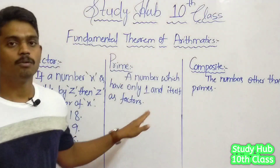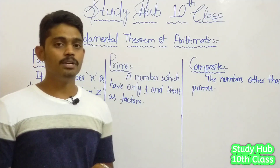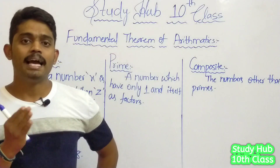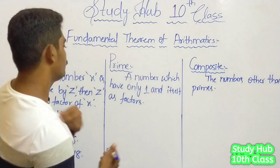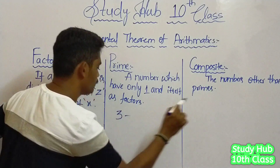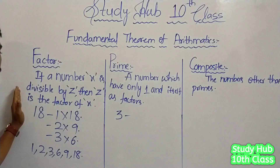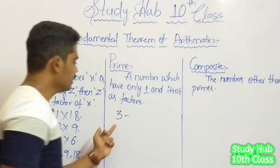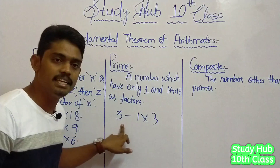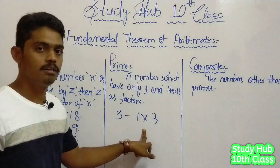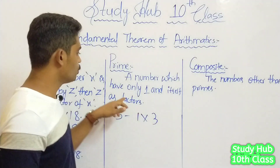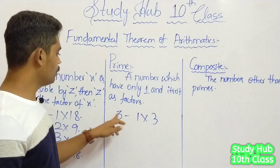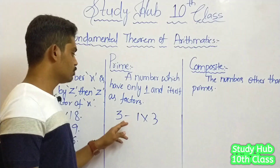Now let us learn prime numbers, friends. What is a prime number? A number which has only 1 and itself as factors is called a prime number. Let us take 3. We can write 3 as 1 into 3. Other than that, is any other operation possible for 3? No. So for 3, only 1 and 3 are factors. Since it has only 1 and itself as factors, 3 is a prime number.